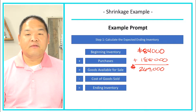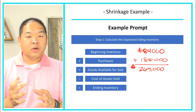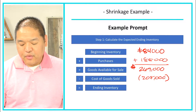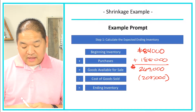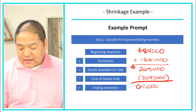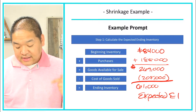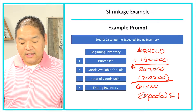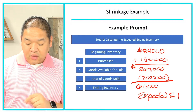From goods available for sale we need to subtract how much we've sold. According to our perpetual inventory system, we sold $208,000 worth of goods. Subtracting $208,000 from $269,000 gives us an expected ending inventory of $61,000. This is what our books currently show as the inventory balance — a debit of $61,000.